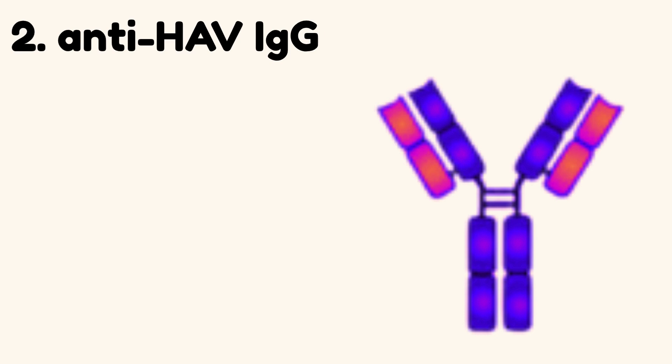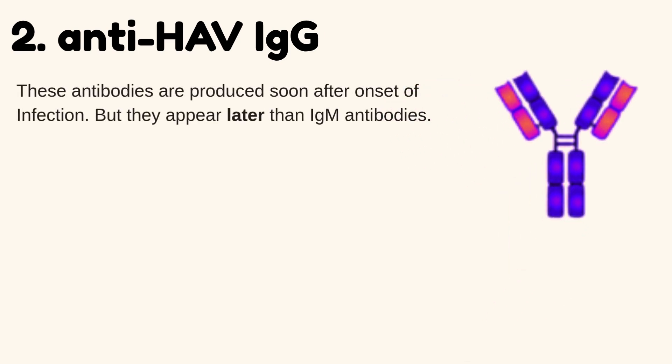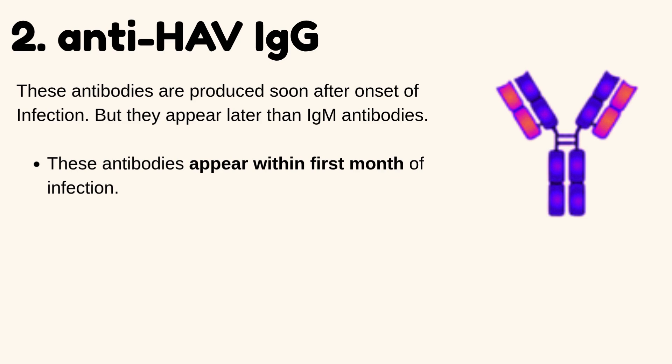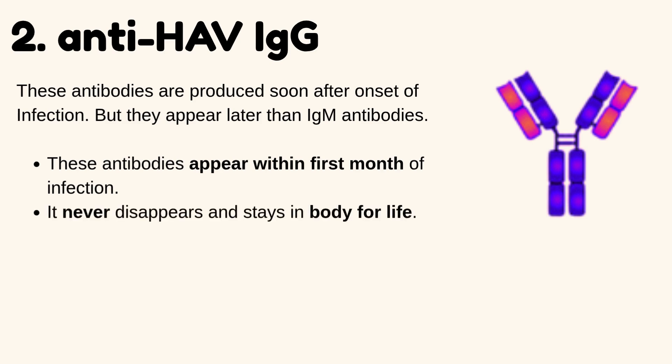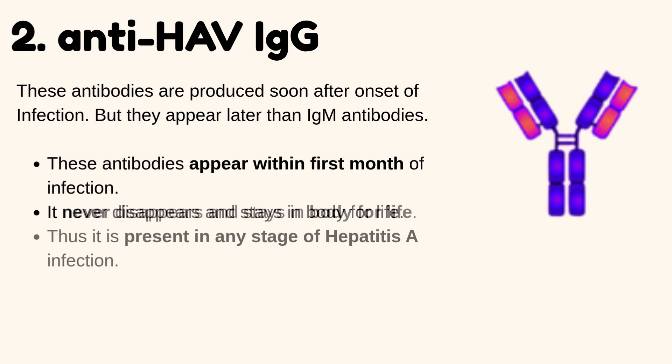Number 2: Anti-HAV IgG. These antibodies are produced soon after the onset of infection, but they appear later than IgM antibodies. These antibodies appear within the first month of infection. They never disappear and stay in the body for life.